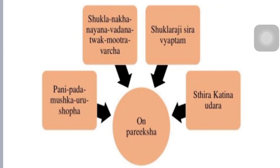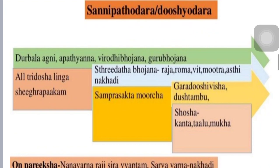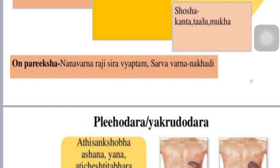In Sannipata Udara, the symptoms of all three Doshas are mixed. Its main Nidana includes Durbhalagni, Apathya Ahara-Vihara, incompatible diet (Virudhahara) and heavy diet. Due to all these, Tridosha Prakopa occurs and leads to Udhar-roga. On examination, the crease lines will be of mixed type colors.